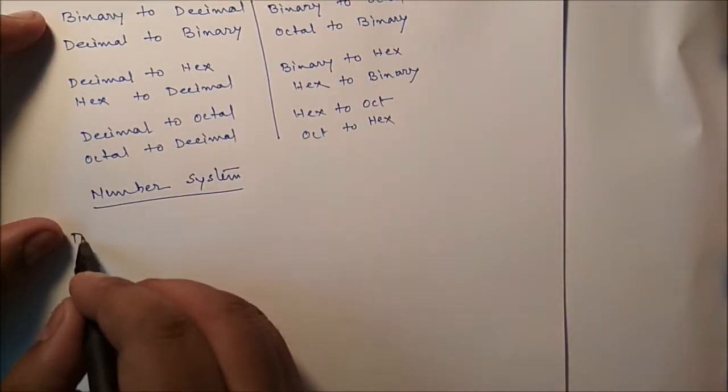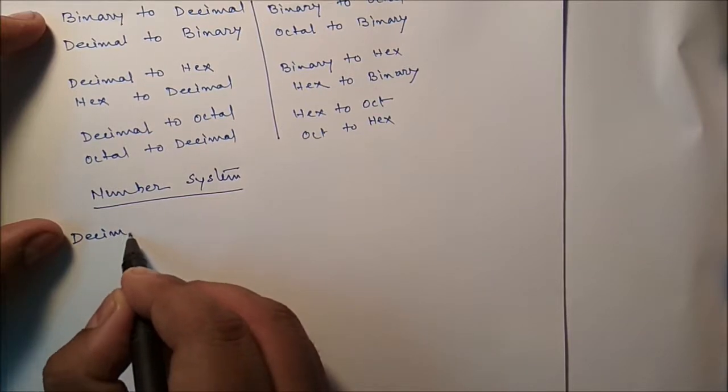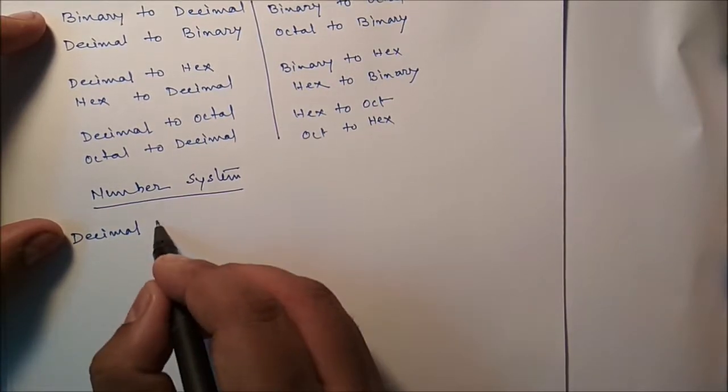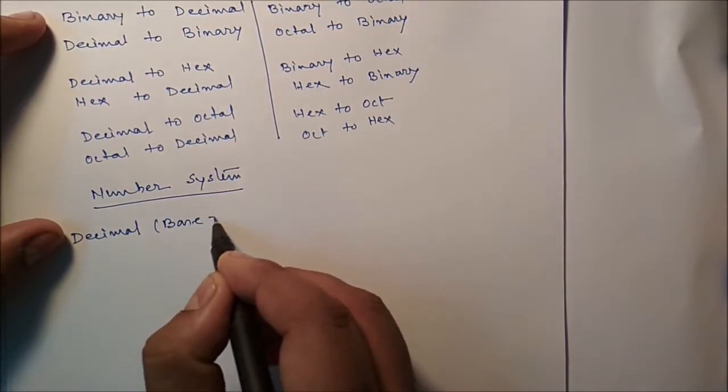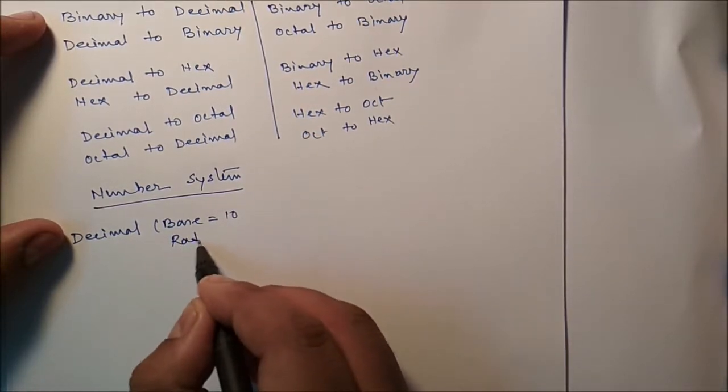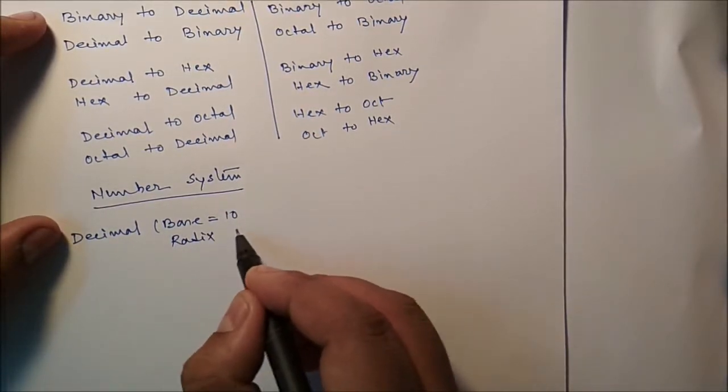Now, in number system, first of all, it is a decimal. In decimal, the base is equal to 10 or radix, same thing, synonyms, that is equal to 10.